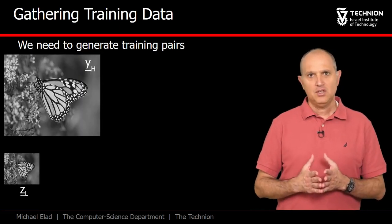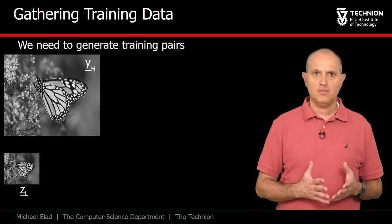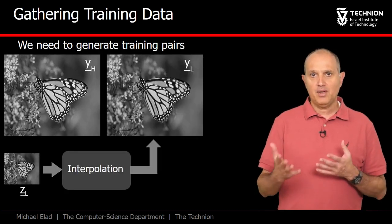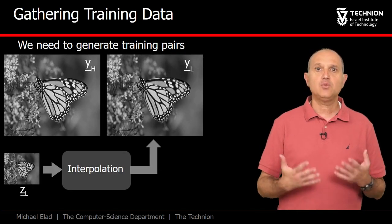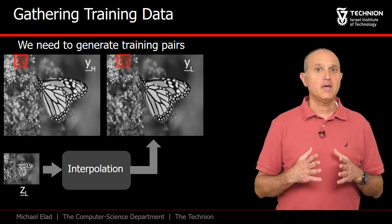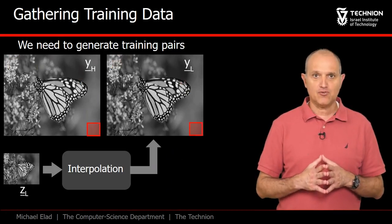How should we train DL and DH? We should gather sets of high and low resolution images. This is easily done. Just choose a set of training images and create low res versions of them. Interpolate back to get pairs of YH and YL, and these will be fed to the training. How? By extracting all the pairs of patches from them.